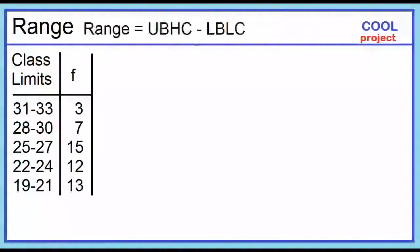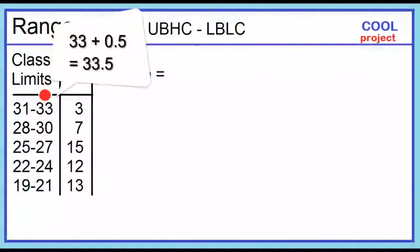The range is equal to the upper boundary of the highest class minus the lower boundary of the lowest class. The highest class is 31 to 33. The upper limit of the highest class is 33. To find the upper boundary, just add 0.5 to the upper limit if the data values are whole numbers. 33 plus 0.5 is 33.5.